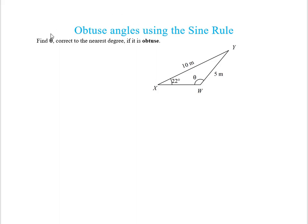Obtuse angles using the sine rule. So today what we're looking at is finding theta correct to the nearest degree if it is obtuse.